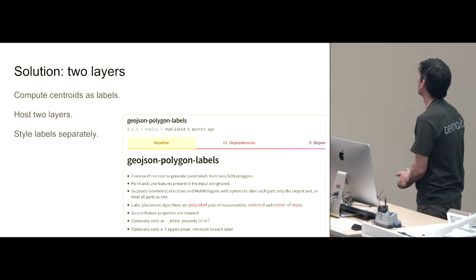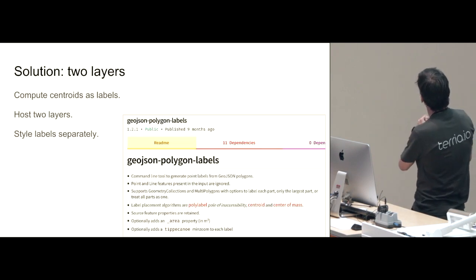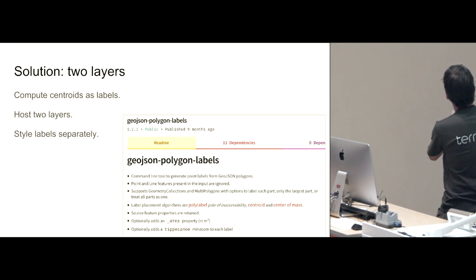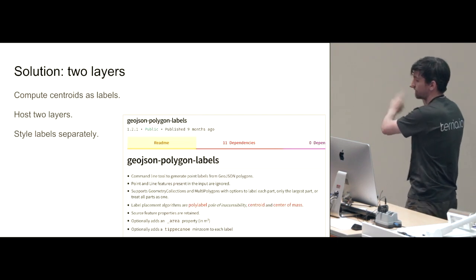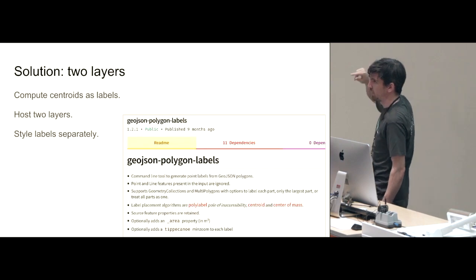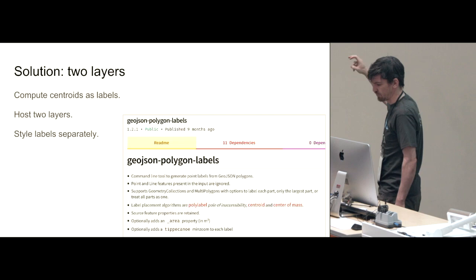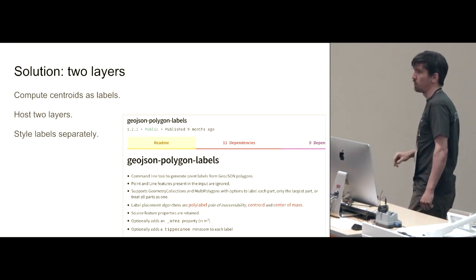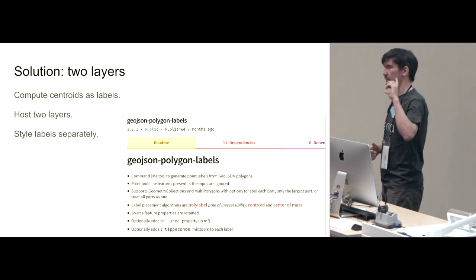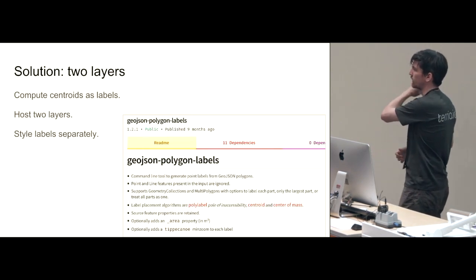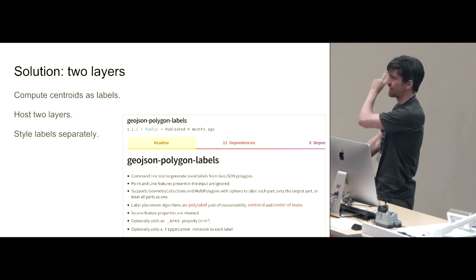Solution: you really don't have a choice — you basically have to generate a separate label layer. Fortunately, Andrew Harvey has written a nice little library. You take your GeoJSON file, run it through geojson-polygon-labels, and it spits out a different dataset — not exactly centroids, but centres of mass or poles of inaccessibility, which are even better than centroids. That is the layer you use to display your labels. Problem solved, at the cost of slightly more complexity: now you have two layers to deal with.